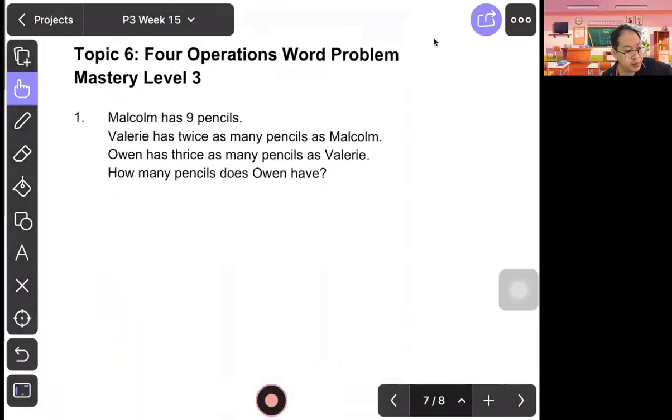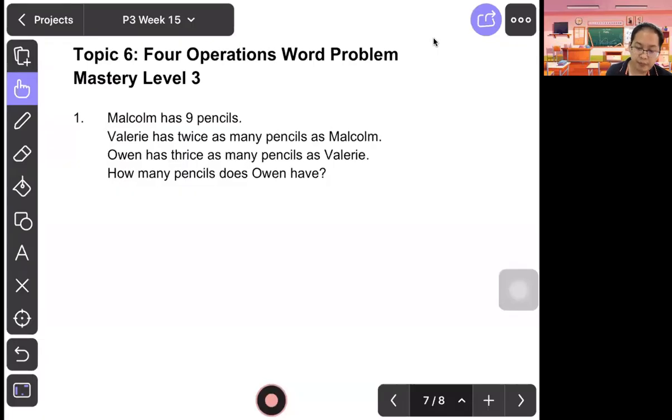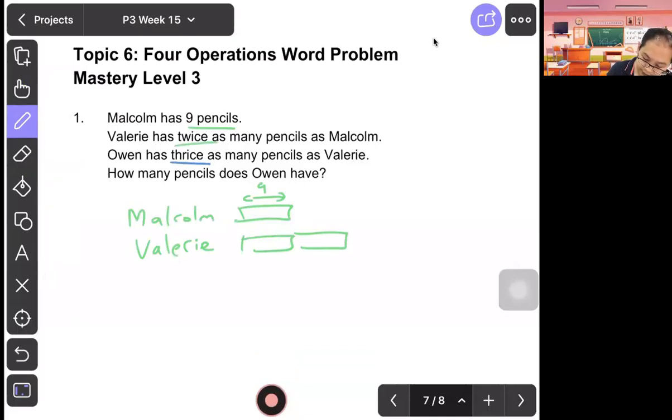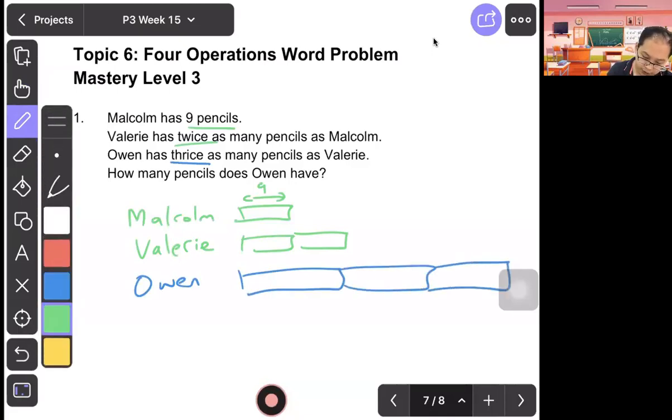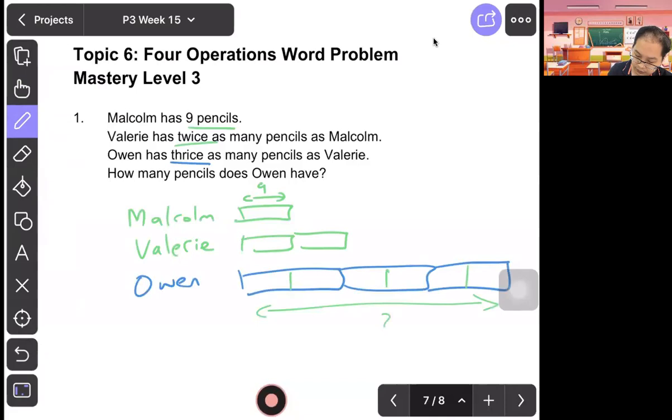Question one: Malcolm has 9 pencils. Valerie had twice. So Malcolm has 9. Valerie is twice, so 2 times. Then Owen had thrice, 3 times. So one, two, three. We may like to break this into two, two, two. So find Owen. One unit you can see in the model is 9 pencils and Owen is six units. So 9 times 6 is 54. Answer is 54.